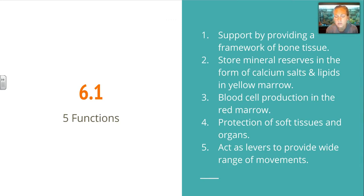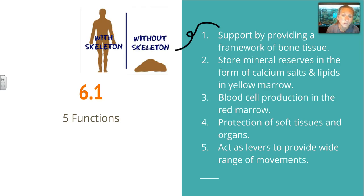There are four other functions. The skeletal system also stores mineral reserves in the form of calcium salts primarily, and then lipids or fats that are in the yellow marrow. It's responsible for blood cell production in the red marrow, protection of soft tissues and organs, and it also acts as a lever to provide a wide range of movements. You can see from a picture of a skeleton that we stand upright, and without one, we'd look like a big pile of mush.